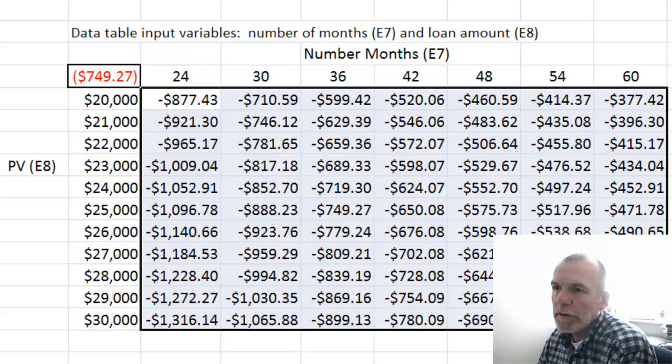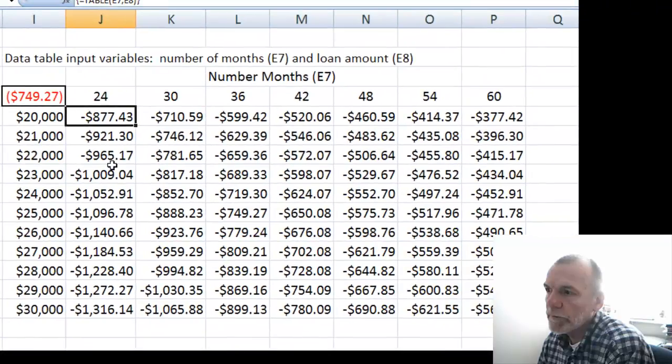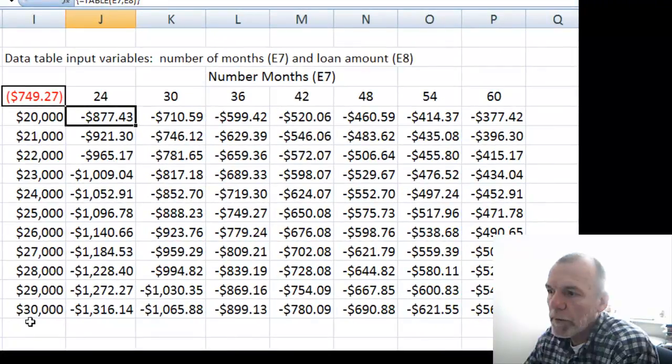So if we had a loan of 24 months for a loan amount of $20,000, the monthly payment would be $877.43, whereas for 60 months and $30,000, the payment amount would be $566.14.